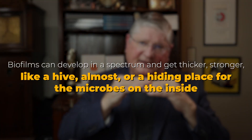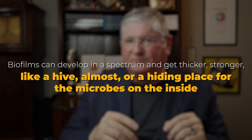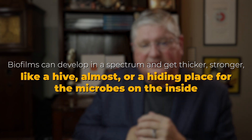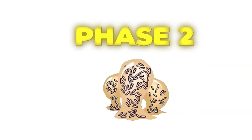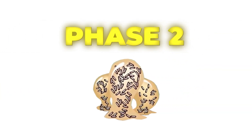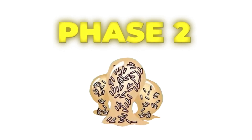Biofilms can develop in a spectrum and get thicker and be a stronger, like a hive almost, or a hiding place for the microbes on the inside. Once we get past the normal ones, we talk about phase one as early and phase two as later. Phase one biofilms are not good for you — they're pathogenic, but they're sort of like a regular stick-built house. Whereas phase two biofilms are like a skyscraper; there's a lot more infrastructure. You can have all sorts of unfriendly bacteria, viruses, fungus, and parasites all living together in there.